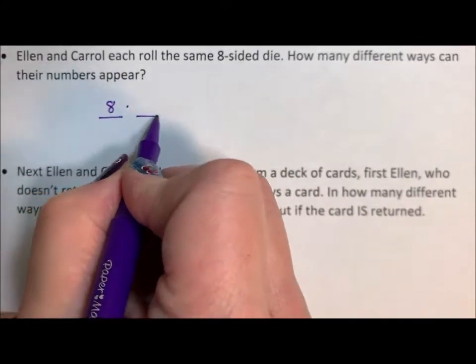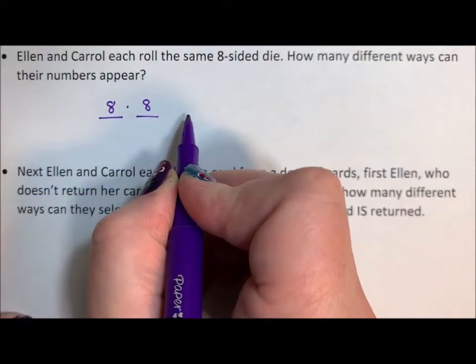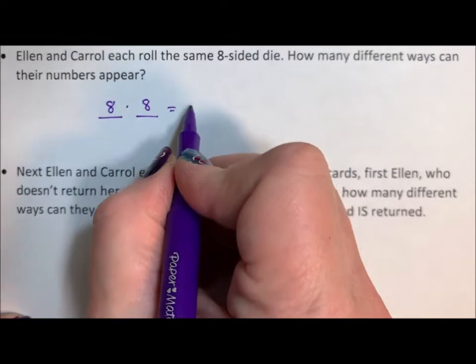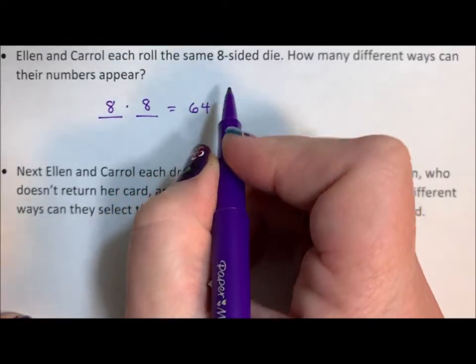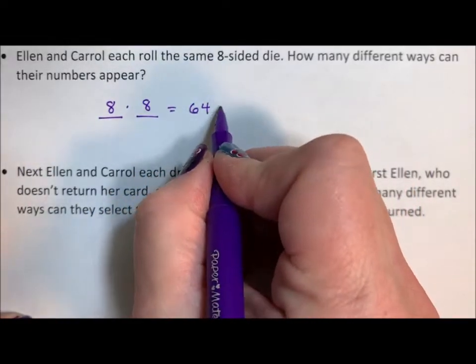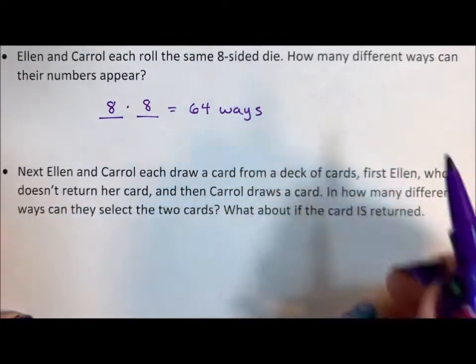After that, Carol rolls an eight-sided die. If we multiply this together, there are 64 ways in which those two die can be rolled.